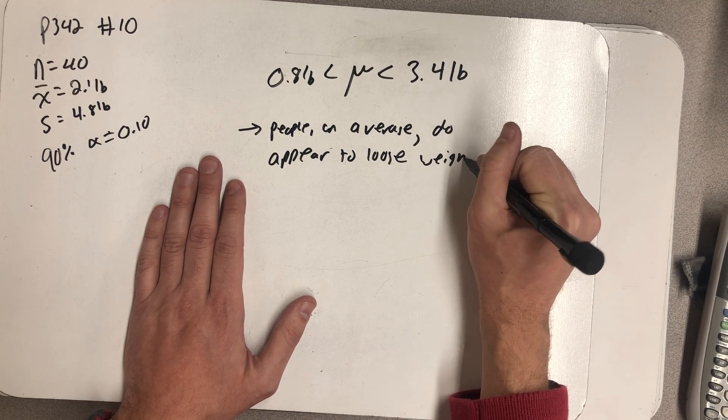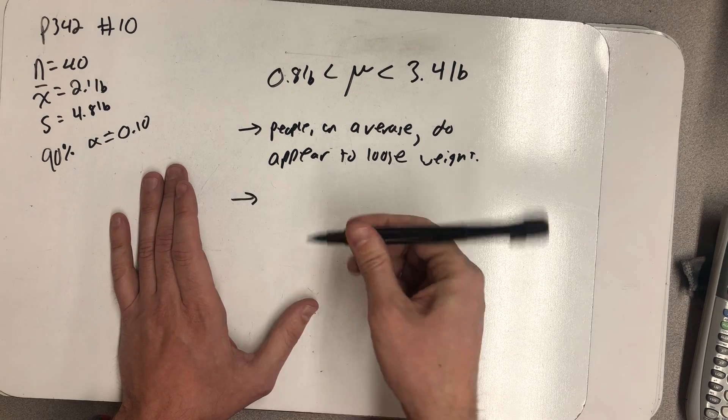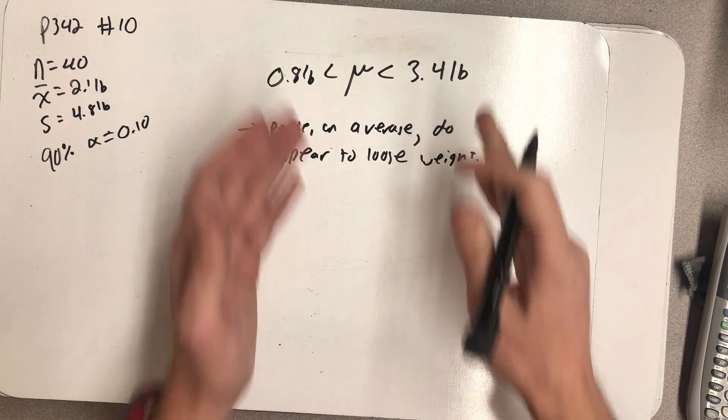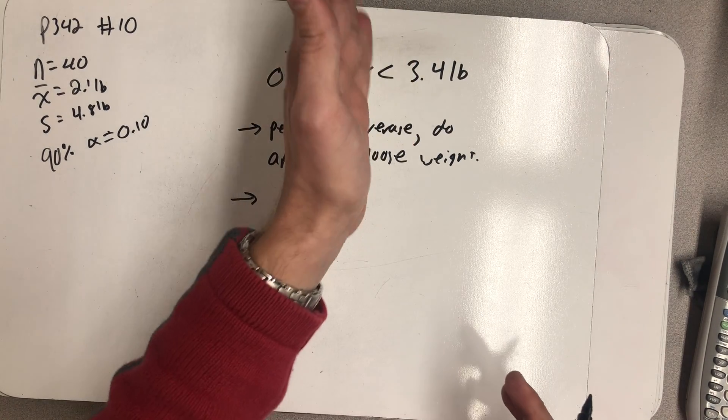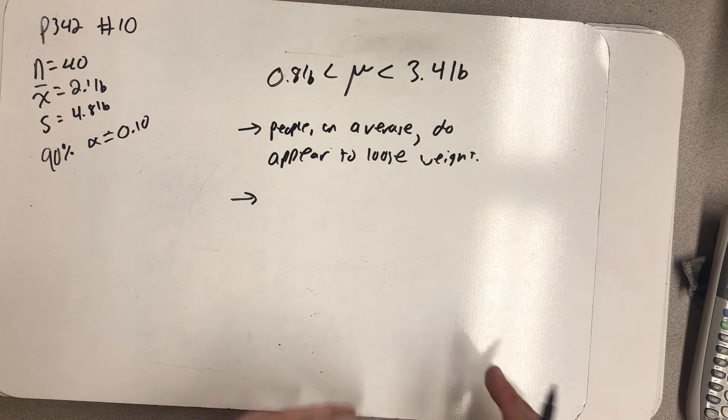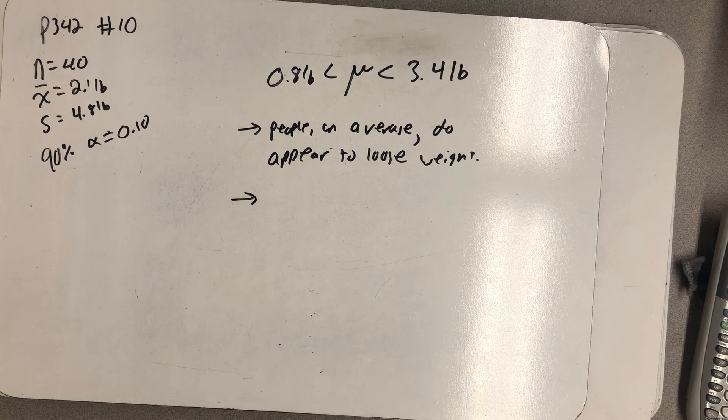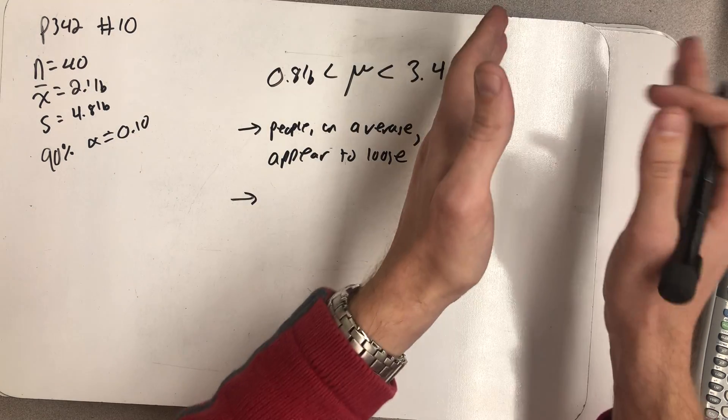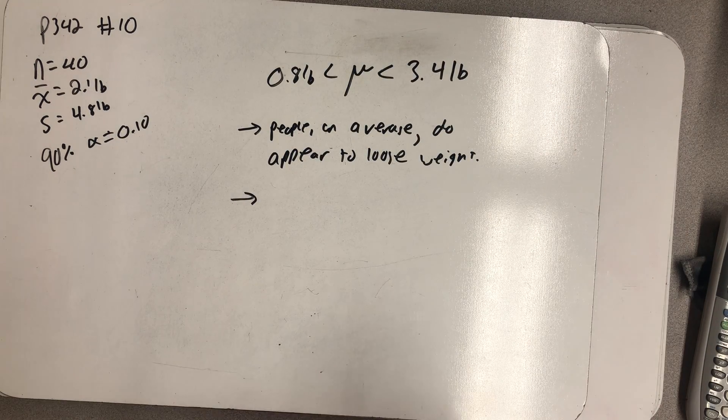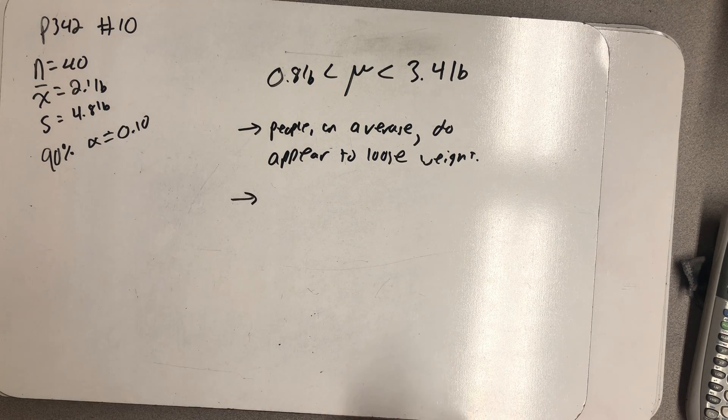But then there's the question of practicality, and because of where this mean lives, I'm 90% sure that the true population mean is between 0.8 and 3.4 pounds. I'd have to say there doesn't seem to be a practical significance because the mean's not up to like 5 pounds or 10 pounds or where people tend to have targeted goals.